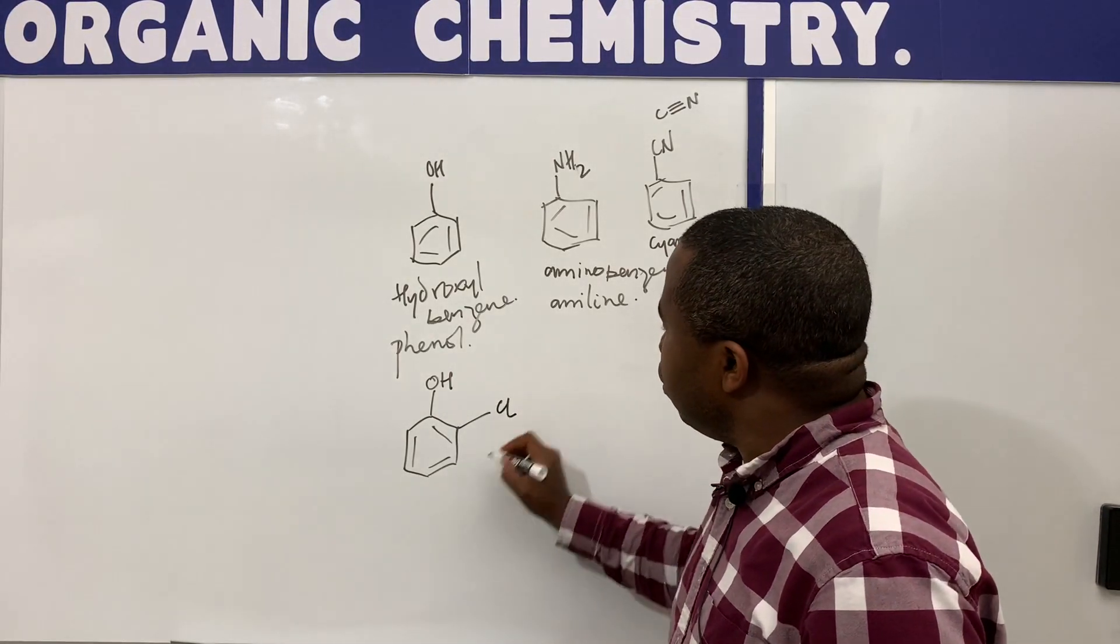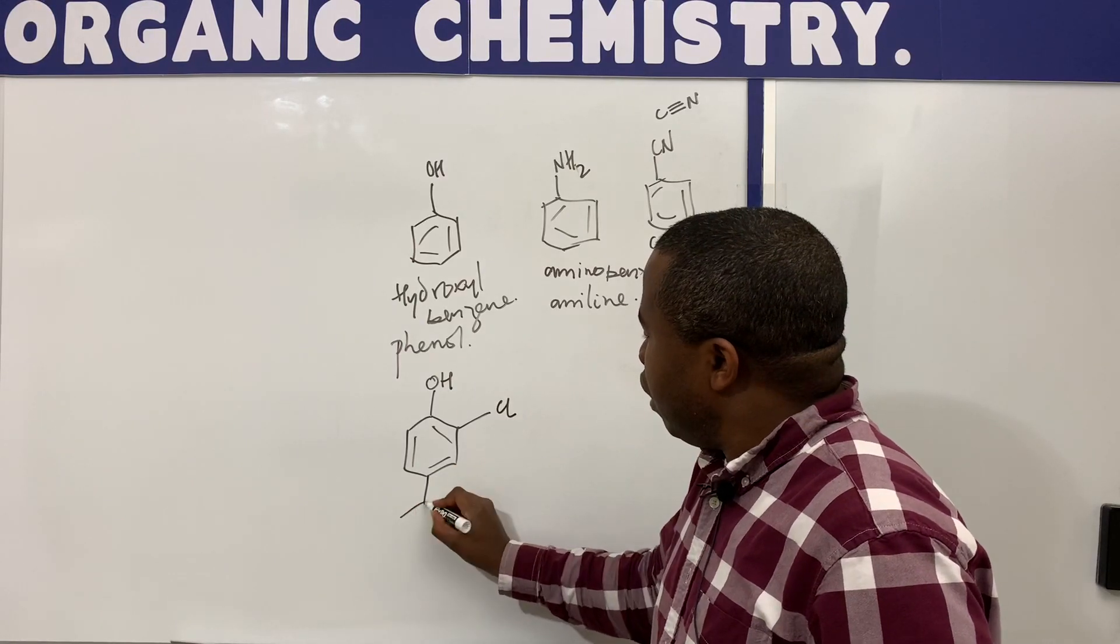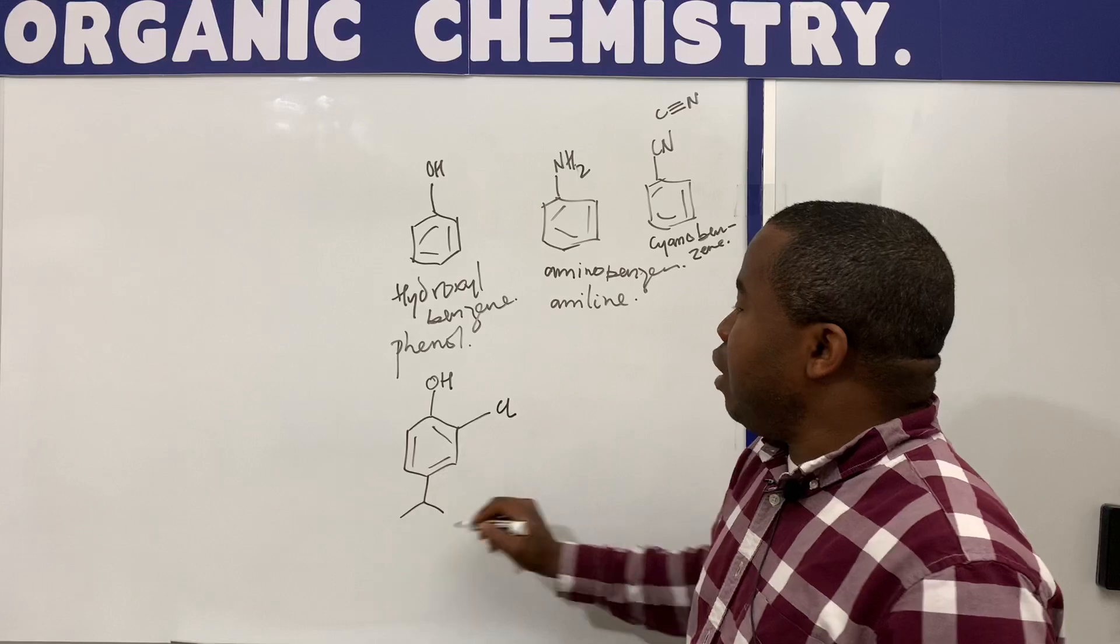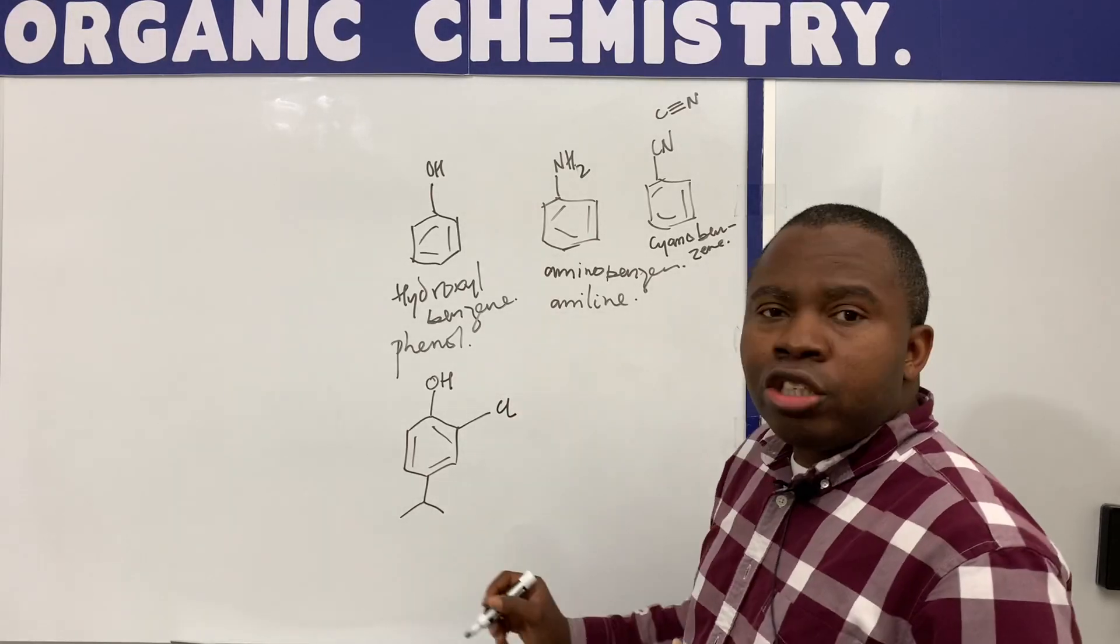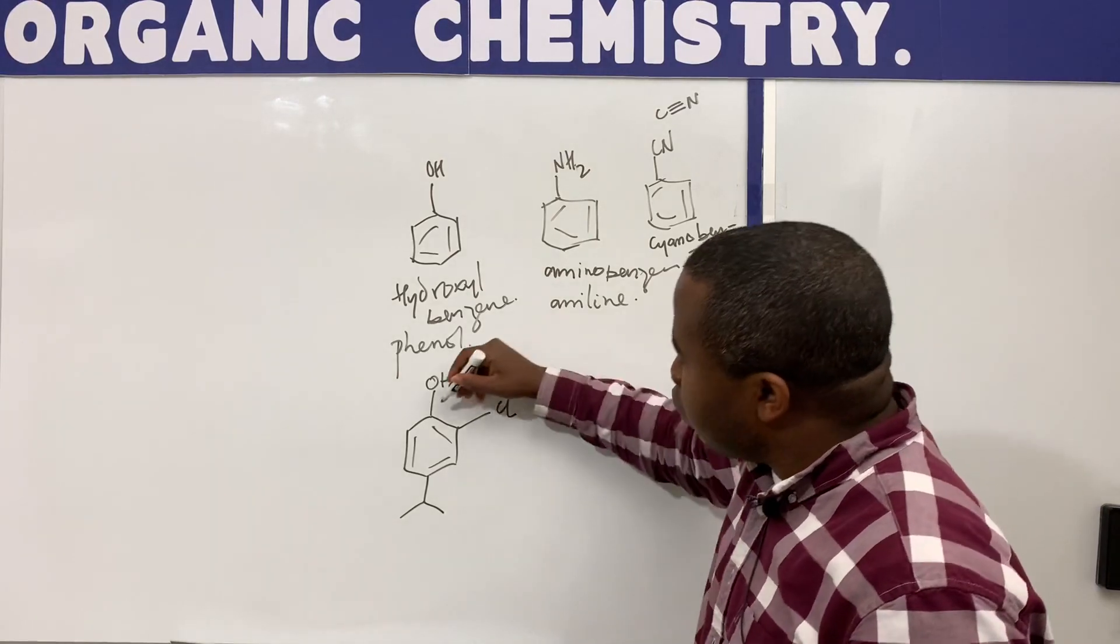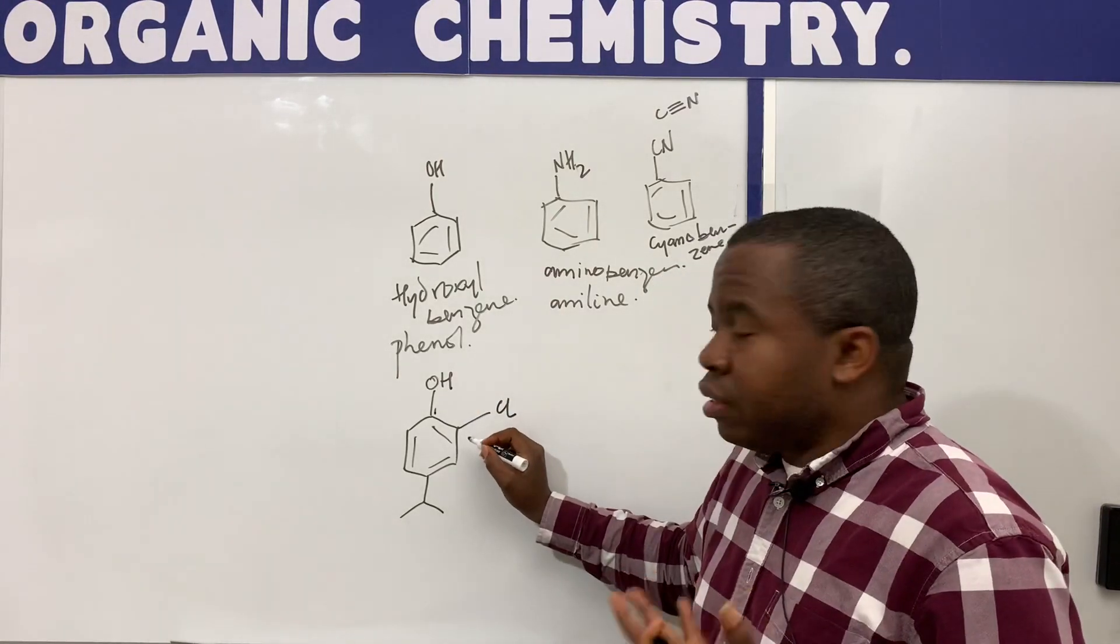So let's say you have a chloro group here and you have an isopropyl group here. To name this, it's not that difficult. Just make sure that the functional group, the carbon to which the functional group is attached, is the first carbon. It's labeled as the first carbon.